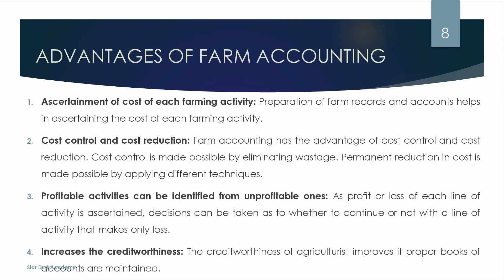Profitable activities can be identified from unprofitable ones — we identify and focus on profitable farming activities. Next is increase of credit worthiness — when we prepare books of accounts, lenders check them to evaluate our credit worthiness before providing loans.